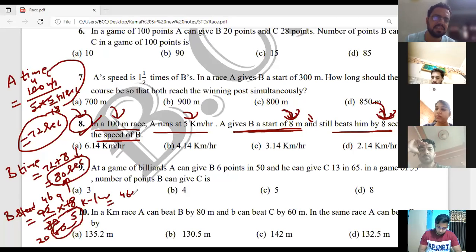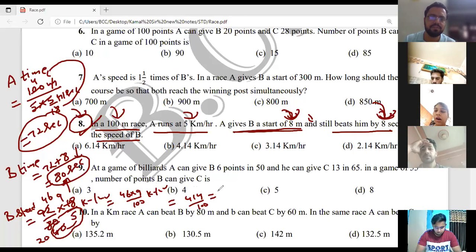46 into 9 over 100 kilometers per hour. If 46 into 10, it would be 460. 46 into 9, so from 460 subtract 46, meaning 414 over 100. That means 4.14 kilometers per hour is our answer.